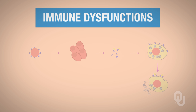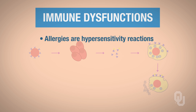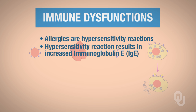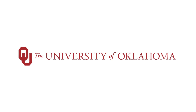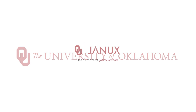We also have immune dysfunctions, one of which is allergies, which many of us suffer from. Allergies are actually hypersensitivity reactions, and when you have a hypersensitivity reaction, you're going to have an increase in immunoglobulin E. The most serious consequence of an allergic response is that IgE antibodies being produced can cause your mast cells to secrete histamine.